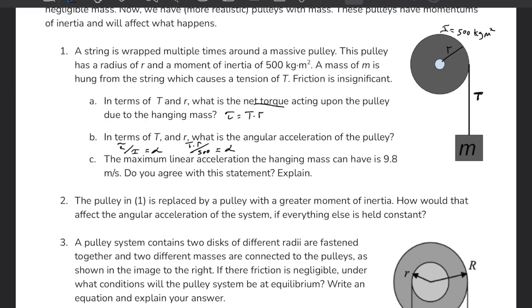The maximum linear acceleration the hanging mass can have is 9.8. Do you agree? Well, let's say 9.8 and 10, one and the same thing. If we were to cut the rope, let mg fall, the acceleration would be 10. So we know that the max is 10.